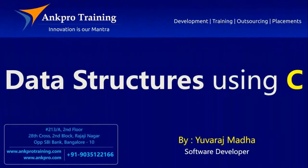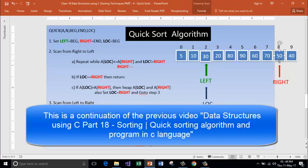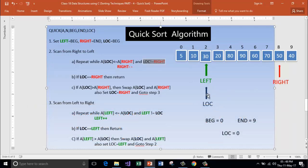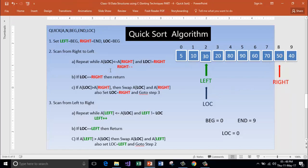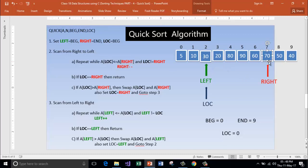Hello friends, you are watching data structures using C. All the videos are brought to you by Angpro Training from Angpro Technologies. Is 30 lesser than 50? Yes, the condition gets true here. And location of course not equal to right, because 2 is not equal to 8. Next, decrement right. Now check the condition again because we are in the loop still. Is A of location less than A of right? Is 30 less than 70? Yes.